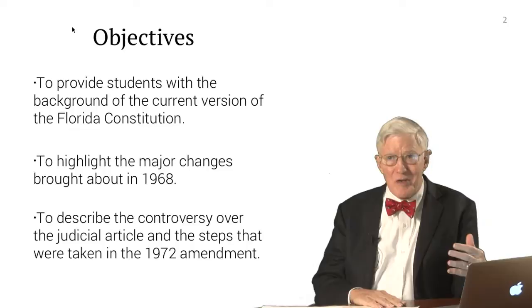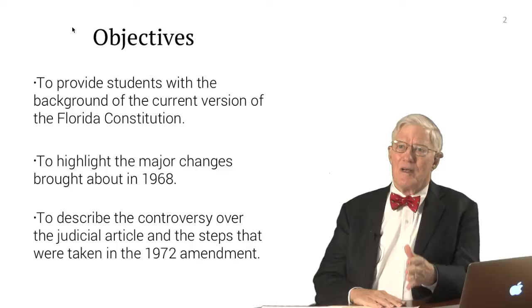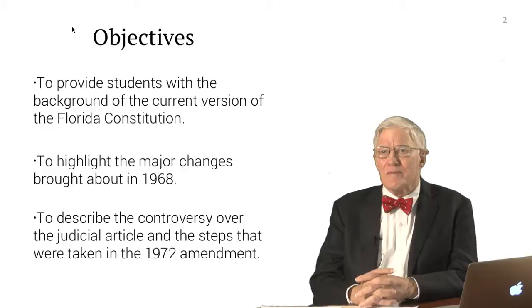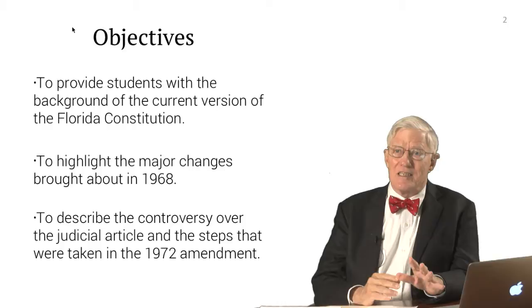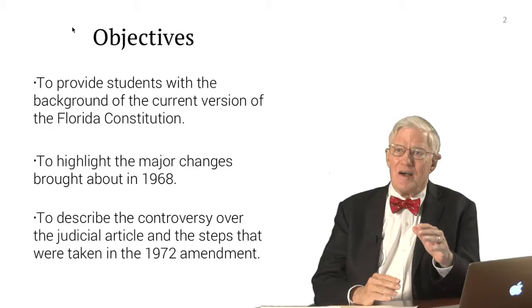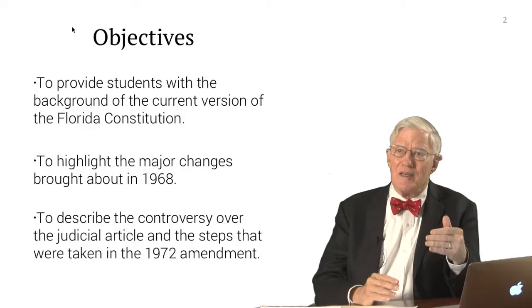We'll deal with apportionment more when we get to Article 3, but this large federal principle that guides the legislature in apportioning the legislature came into play before the 1966 legislature was elected. It continued forward after the '66 legislature was elected and had an enormous impact on the Constitution revision process, for reasons that I will illustrate in just a moment.